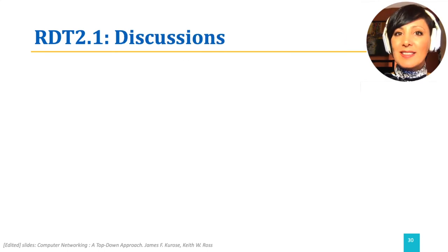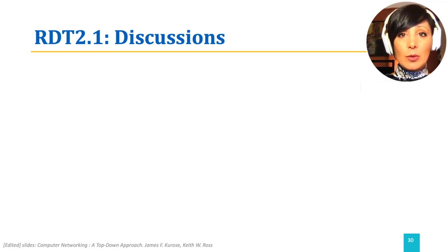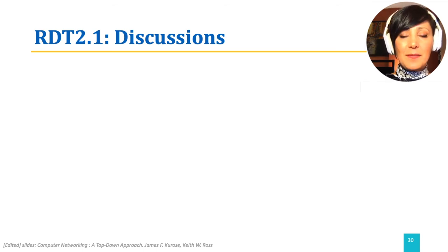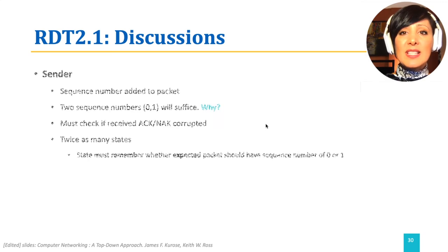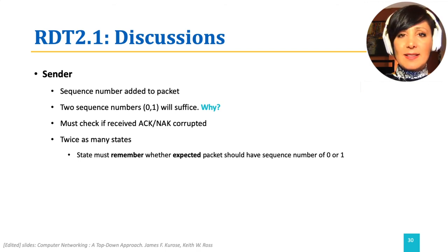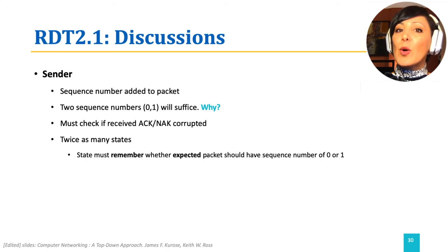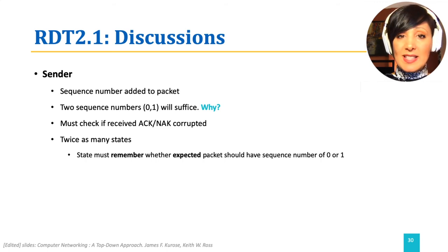In short, in RDT 2.1, an attempt to resolve the fatal flaw observed in RDT 2.0 — which was ignoring the possibility of corrupt ACK and NAC — we added sequence numbers to the design. Two sequence numbers, 0 and 1, were enough because we were using stop-and-wait. Can you think why? Correctness of ACKs and NACs were checked and we had twice as many states, each for one of the sequence numbers.